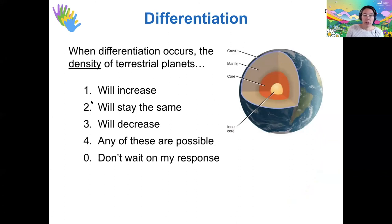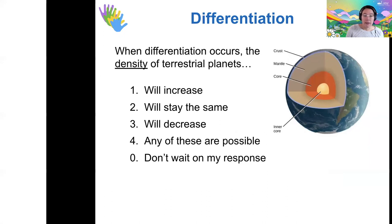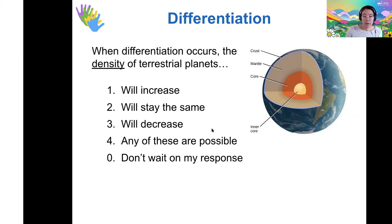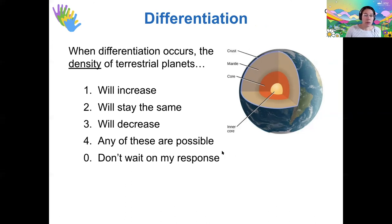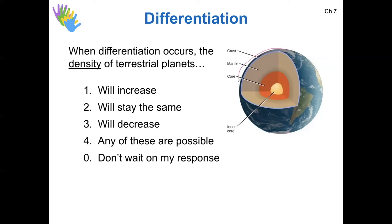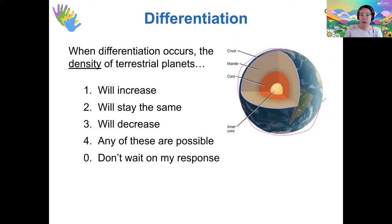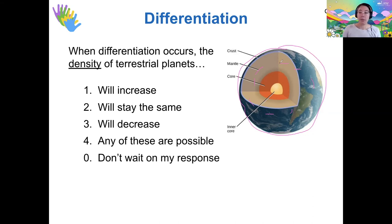When differentiation occurs, the overall average density of terrestrial planets stays the same. If you draw a boundary around the whole planet, the mass isn't leaving and the volume isn't changing, so the density isn't changing. But if you draw a boundary on the inside of the planet, the density inside would be going up while the density outside of that inner region would be going down. The total density of the entire planet stays the same.